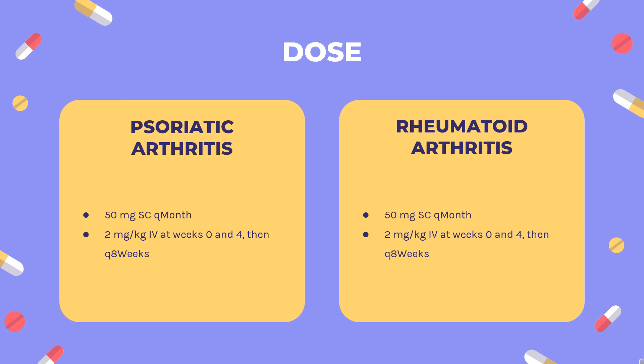Ulcerative colitis — Simponi: Indicated in adults with moderate to severe active ulcerative colitis who demonstrate corticosteroid dependence or inadequate response to, or failed to tolerate, oral aminosalicylates, oral corticosteroids, azathioprine, or 6-mercaptopurine. Dosing: Initial 200 mg SC at week 0, followed by 100 mg SC at week 2. Maintenance: 100 mg SC every 4 weeks.